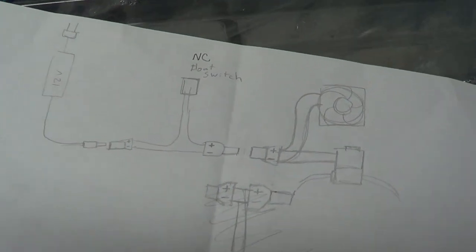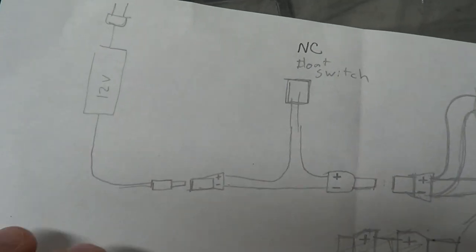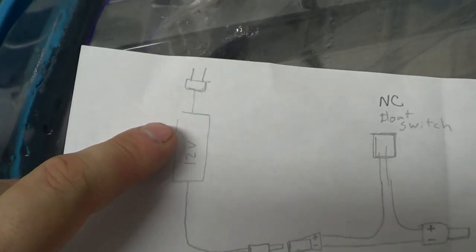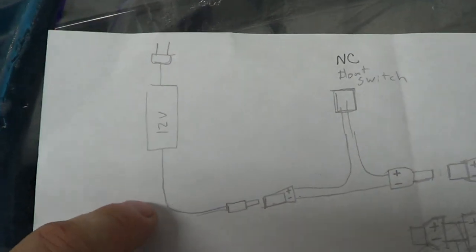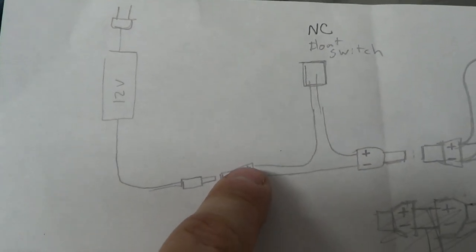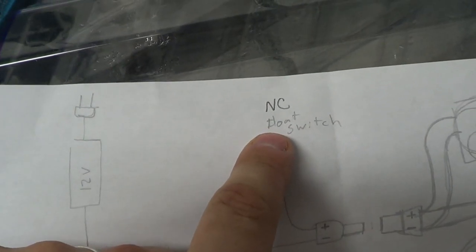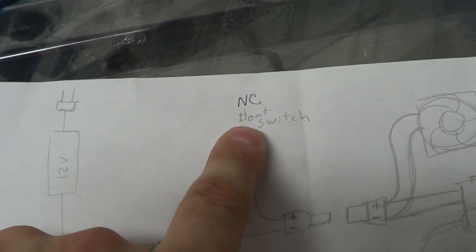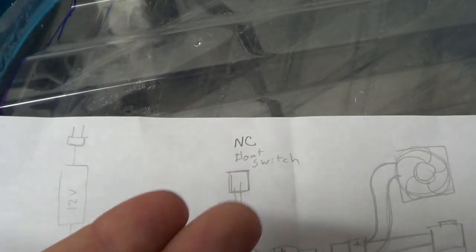So we start here with a 12-volt adapter going into the wall. From there we have a positive wire which goes to our normally closed float switch. A normally closed float switch means that electricity is going to be passing through it normally, but when the float switch rises, it becomes open and opens the circuit, which means that it disconnects the power and shuts the power off from the rest of the loop.